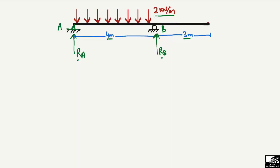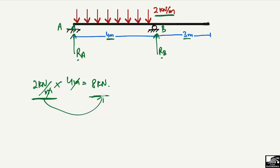To find Ra and Rb, we convert the uniformly distributed load into a point load. The UDL is 2 kN per meter, acting over a length of 4 meters. Multiplying these gives 8 kN. This equivalent point load acts at the center of the distributed portion, which is at 2 meters from each end — so 2 meters from start and 2 meters to support B.